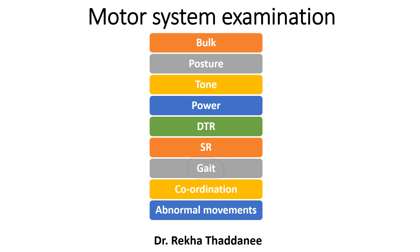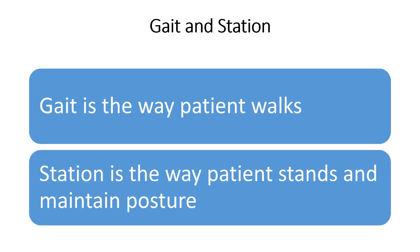Today I am going to tell you the details of gait. Whenever we are observing the gait and station of the patient, we are basically looking at the CNS. Gait and station both are the mirror of CNS. We have to observe each and every patient — how the patient is walking, how the patient is standing from the sitting and lying down position.